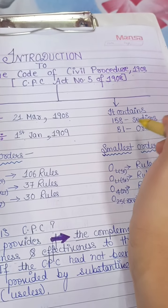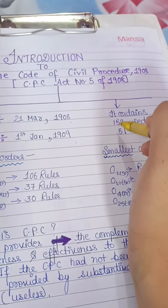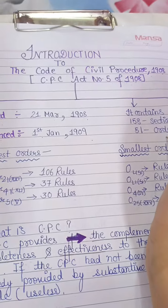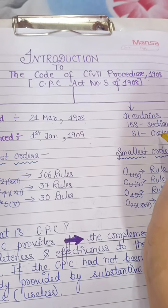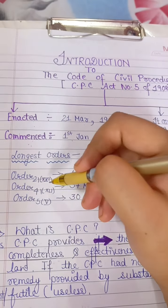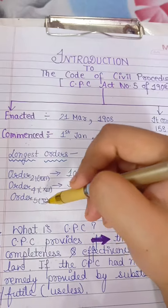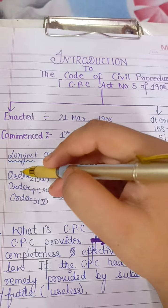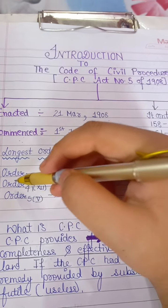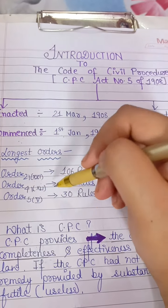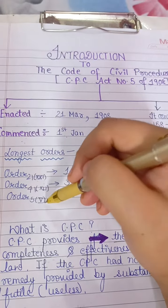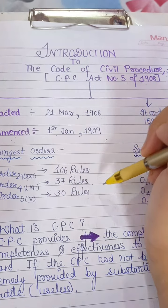It contains a total of 158 sections and 51 orders. The longest orders are Order 21, Order 41, and Order 5. In Order 21 there are 106 rules, in Order 41 there are 37 rules, and in Order 5 there are 30 rules.